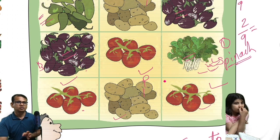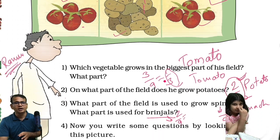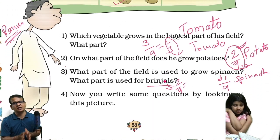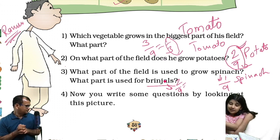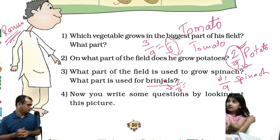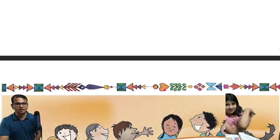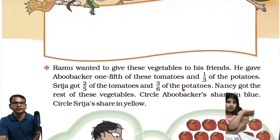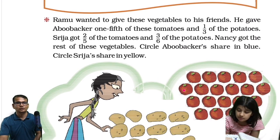We have completed page number 58 of Chapter 4, Parts and Holes, NCRT book. Now we will do page number 59. Ramu wanted to give these vegetables to his friends. He gave Abu Bakar one fifth of the tomatoes and one by three of the potatoes.